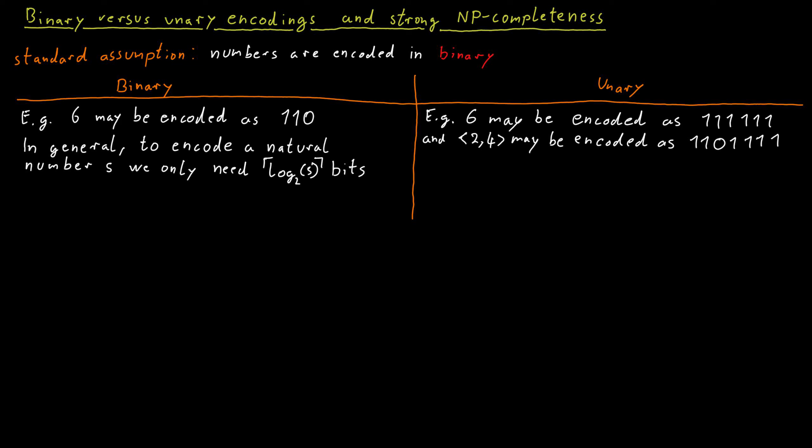When using unary encoding of numbers, we notice that the length of the resulting string is equal to the size of the encoded number. So if we encode a number s, we need a string of length s as opposed to log s in the binary case. Therefore, unary encoding is exponentially worse in terms of bit string length than binary encoding.